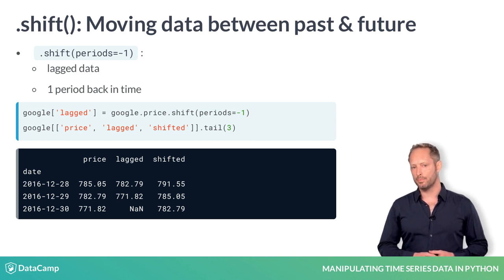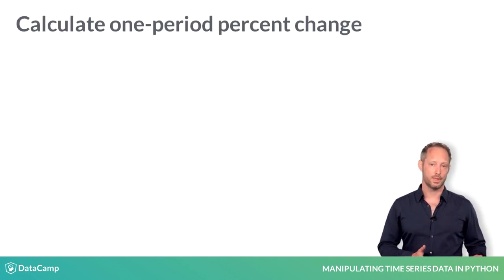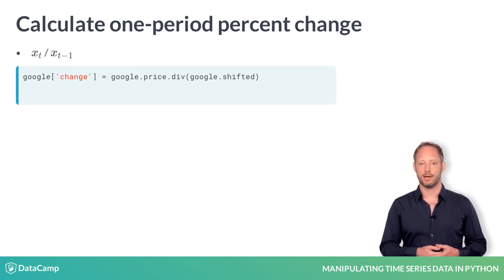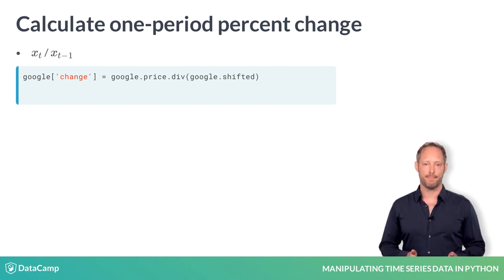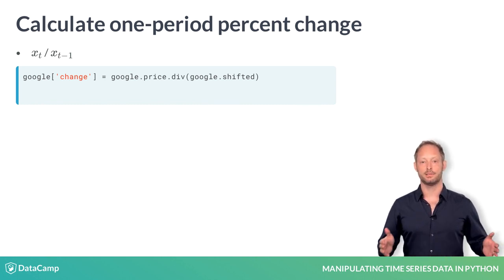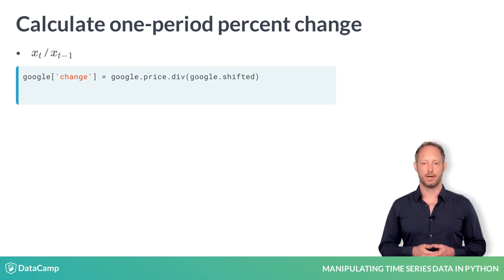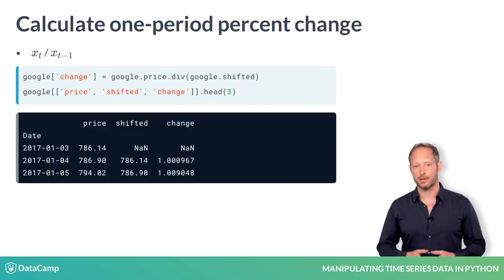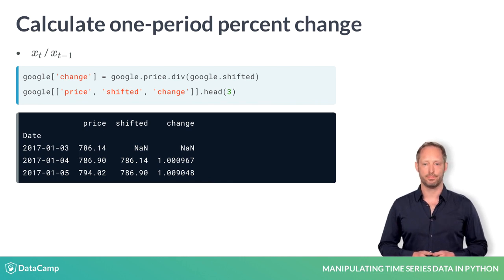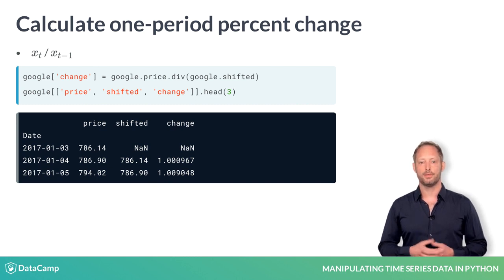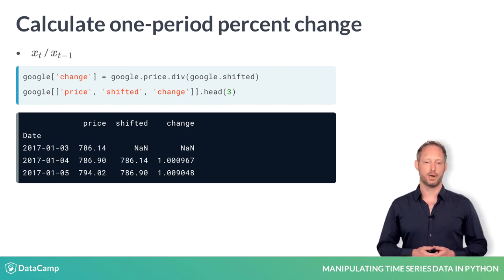Shifting data is useful to compare data at different points in time. You can for instance calculate the rate of change from period to period, which is also called financial return in finance. The method div allows you not only to divide a series by a value but by an entire series — for instance by another column in the same data frame. Pandas makes sure the dates for both series match up and will divide the aligned values accordingly. As a result you get the relative change from the last period for every price — that is, the factor by which you need to multiply the last price to get the current price.